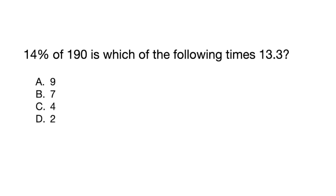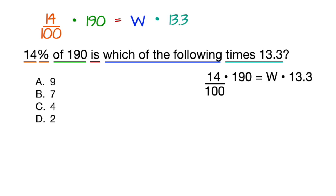Let's try another example. 14% of 190 is which of the following times 13.3? 14%, which means 14 divided by 100. Of means multiply, so times 190. Is means equals. Which of the following means place a variable there, times 13.3. And there's our equation, just like that.